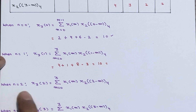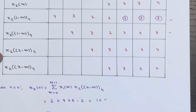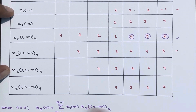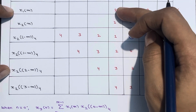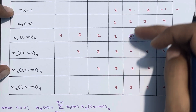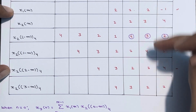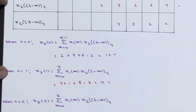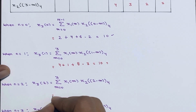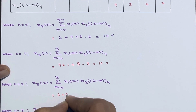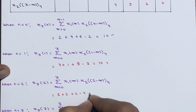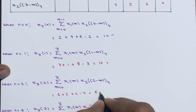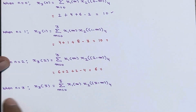When n=2, we need x1(m) and x2(2-m). Multiplying element-wise and summing: 2×3 + 1×2 + 2×1 + (-1)×4 = 6 + 2 + 2 - 4 = 6. So x3(2) = 6.